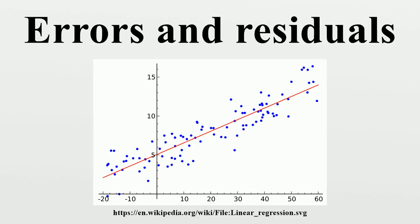However, because of the behavior of the process of regression, the distributions of residuals at different data points may vary even if the errors themselves are identically distributed. Concretely, in a linear regression where the errors are identically distributed, the variability of residuals of inputs in the middle of the domain will be higher than the variability of residuals at the ends of the domain. Linear regressions fit endpoints better than the middle. This is also reflected in the influence functions of various data points on the regression coefficients — endpoints have more influence. Thus to compare residuals at different inputs, one needs to adjust the residuals by the expected variability of residuals, which is called studentizing. This is particularly important in the case of detecting outliers. A large residual may be expected in the middle of the domain, but considered an outlier at the end of the domain.